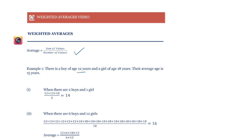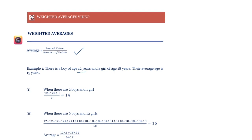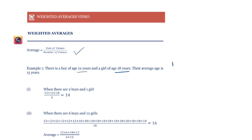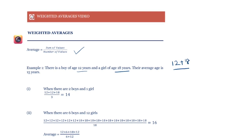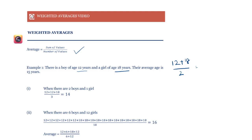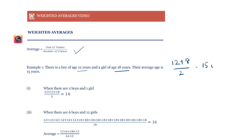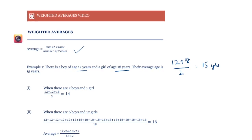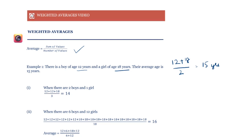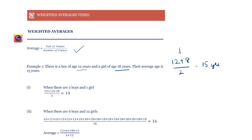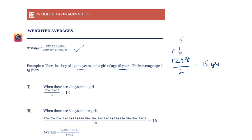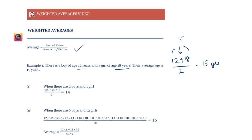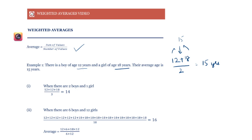For example, if there is a boy of age 12 years and a girl of age 18 years, their average is 12 plus 18 divided by 2, which gives us 15 years. Note that it lies right in the middle of 12 and 18. 15 is three steps ahead of 12 and three steps behind 18.